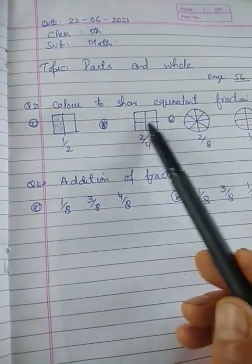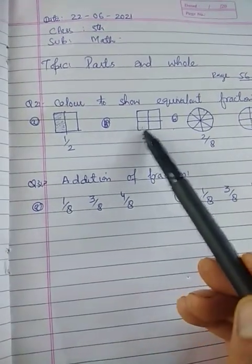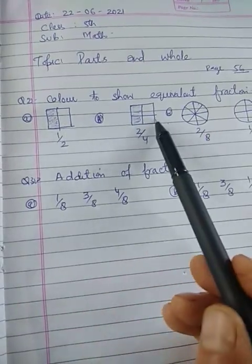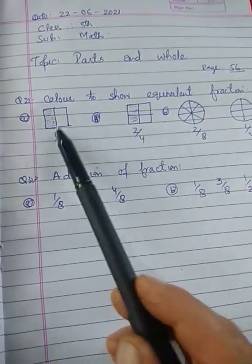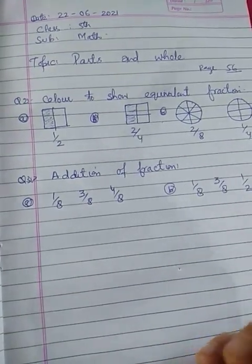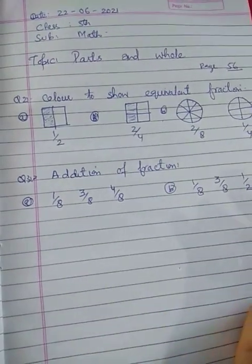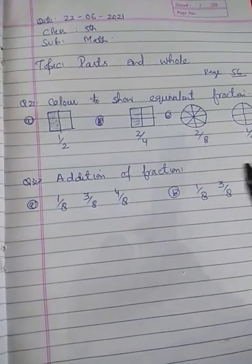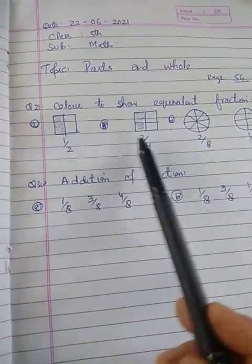The second figure is divided into 4 equal parts, and we have to color two parts. If we color two parts, that represents 2 by 4. So 1 by 2 and 2 by 4 are equal or equivalent fractions.